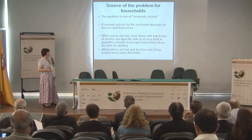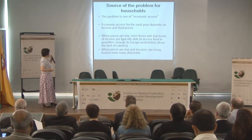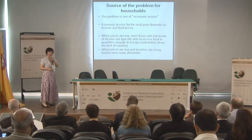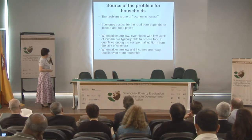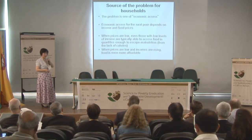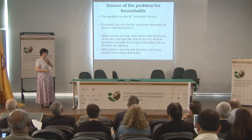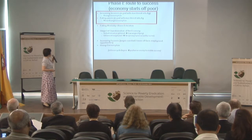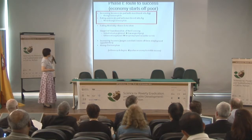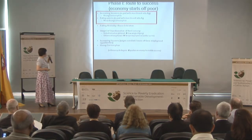The source of the problem for households is economic access, which for the rural poor depends on income and food prices. When prices are low, people can afford to eat. When incomes rise, food becomes even more affordable. The policy focus in Phase 1 is on two levers: increasing income and lowering food prices—with falling prices and rising incomes both working to benefit the poor.